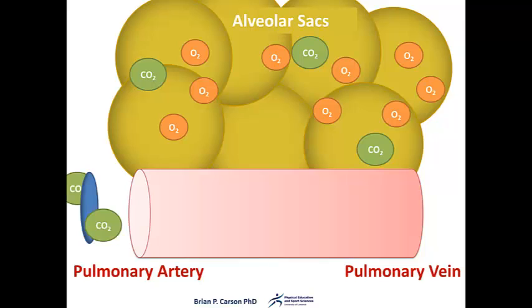Carbon dioxide is transported in three forms: bound to hemoglobin on the erythrocyte, as hydrogen also bound to hemoglobin, or as bicarbonate dissolved in the blood.